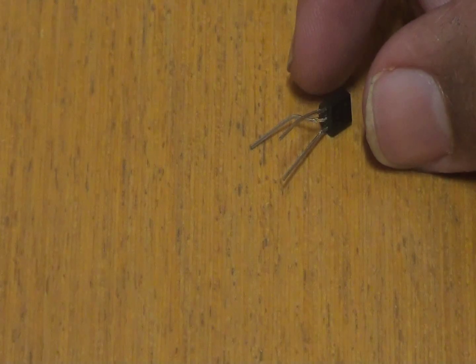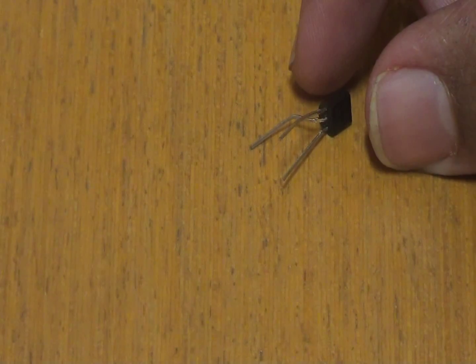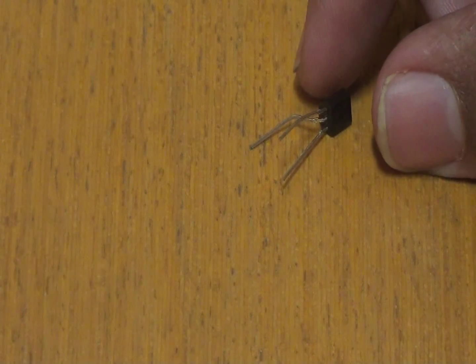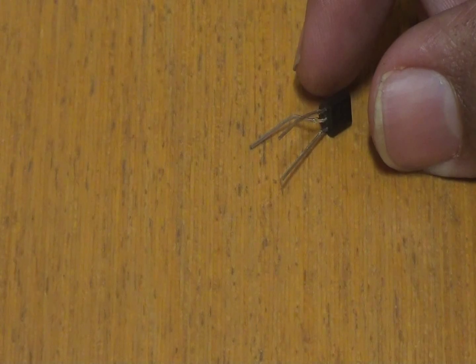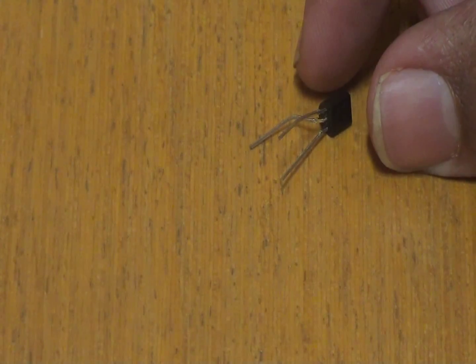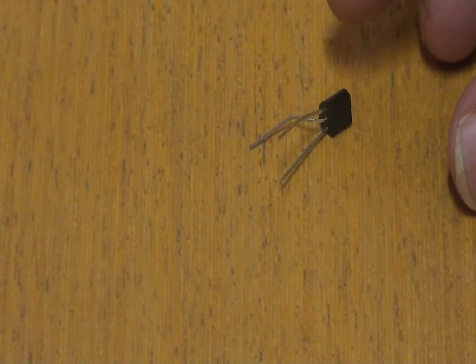So this NPN BC547 transistor can be used in two different modes. As we know one is forward bias mode and the other is reverse bias mode. So in the forward bias mode, the electrical current can easily flow through it. So it just acts as a closed switch.